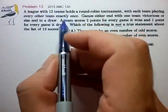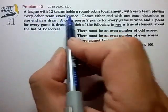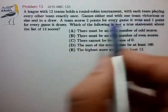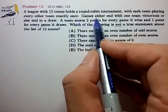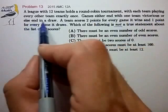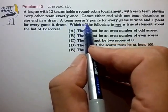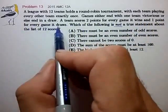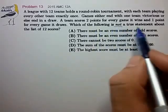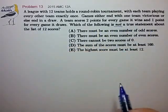Hi, this is problem 13 of the AMC 12A. A league with 12 teams holds a round-robin tournament, each team playing every other team once. Games either end in victory or a draw. A team scores two points for a victory, one point for a draw. Which of the following is not a true statement about the list of 12 scores?